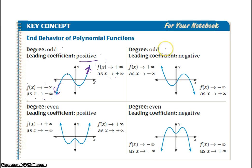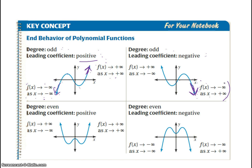If the degree is odd but the leading coefficient is negative — like an x to the fifth or x cubed function with a negative leading coefficient — then as x approaches infinity, the function approaches negative infinity. As x approaches negative infinity, the function approaches positive infinity. So from just the degree and the leading coefficient, we know the end behavior arrows for our graph.